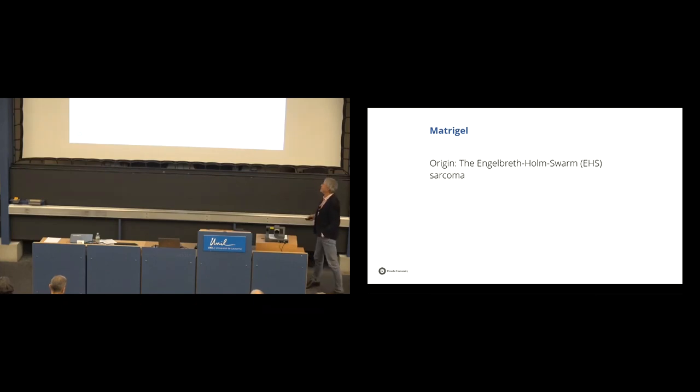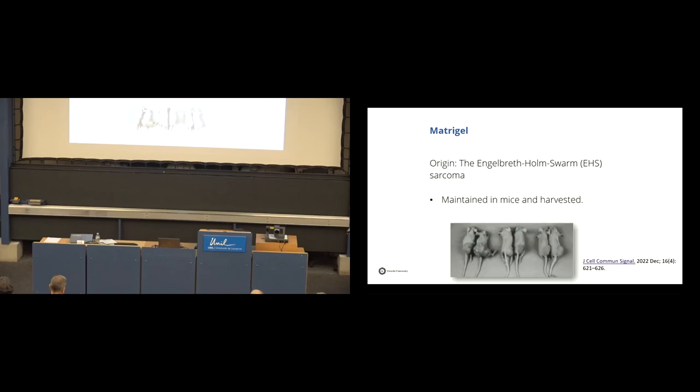So, the origin is the Engelbreth-Holm-Swarm sarcoma. And that is maintained and grown in mice. In the base of the tail, they inject the sarcoma, and there it is grown.